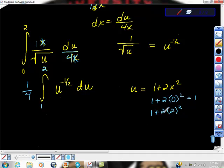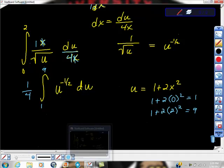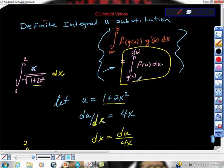2 squared. 2 squared is 4 times 2 is 8 plus 1 is 9, so our new upper limit is 9. And that's exactly what we're saying. That's exactly what these pieces right here say.